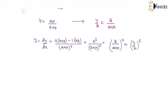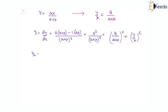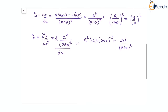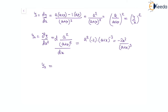For the second derivative y₂ = d²y/dx², we differentiate a²/(a + x)² with respect to x. Since a² is a constant, differentiating (a + x)^(−2) gives −2(a + x)^(−3), so y₂ = −2a²/(a + x)³. Rearranging: y₂ = −(2/a) · (a/(a+x))³ = −(2/a) · (y/x)³.